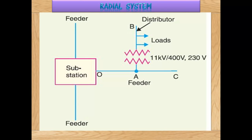The figure shows the radial system. Just as we observe light radiating directly from the sun, the same principle applies here — the substation is at the center and feeders radiate outward. This is the radial system.